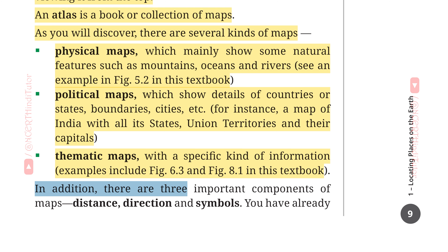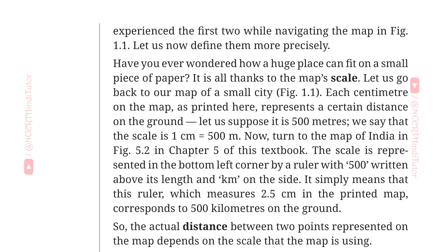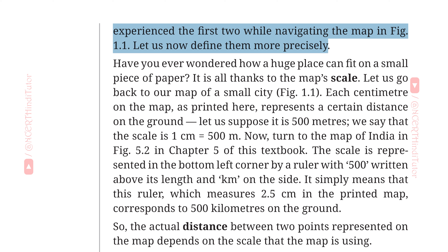In addition, there are three important components of maps: distance, direction and symbols. नक्शों के तीन महत्वपूर्ण घटक हैं: दूरी, दिशा और प्रतीक। You have already experienced the first two while navigating the map in figure 1.1. Let us now define them more precisely.